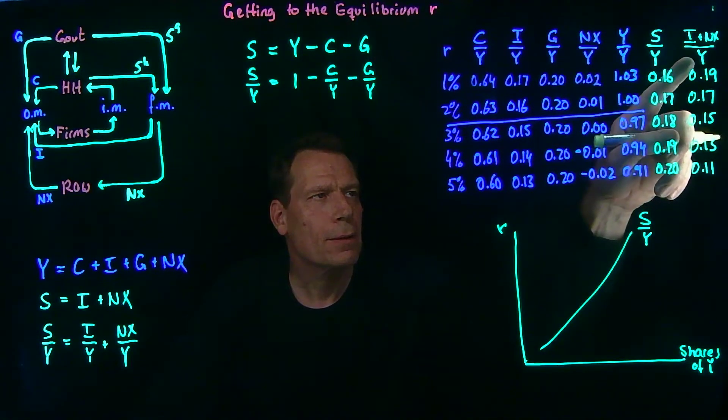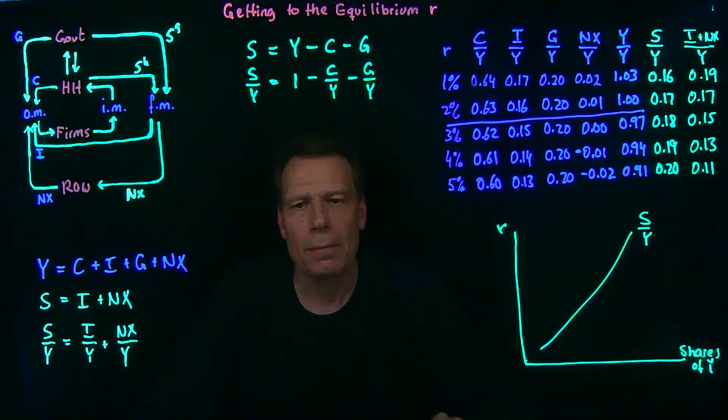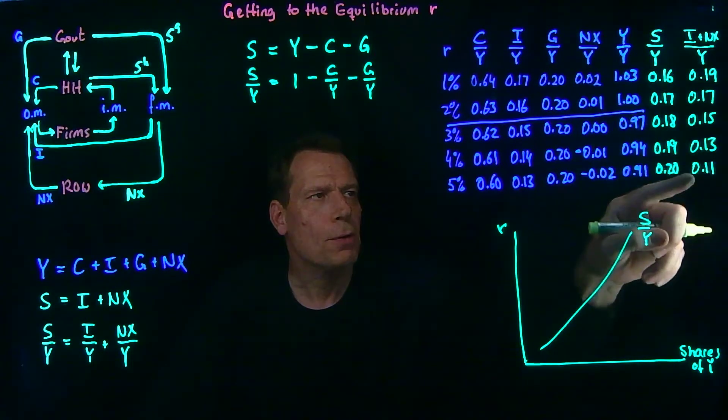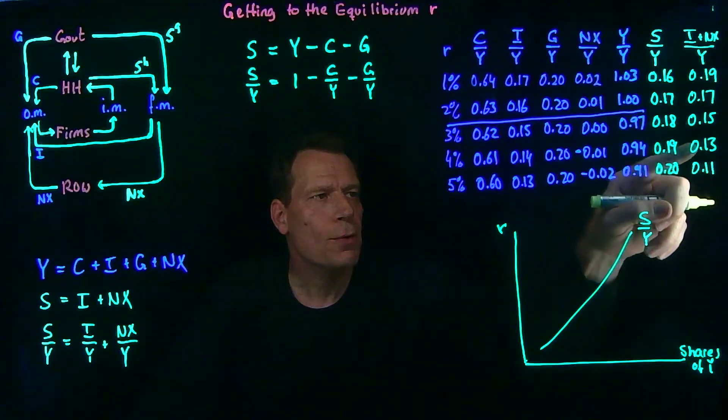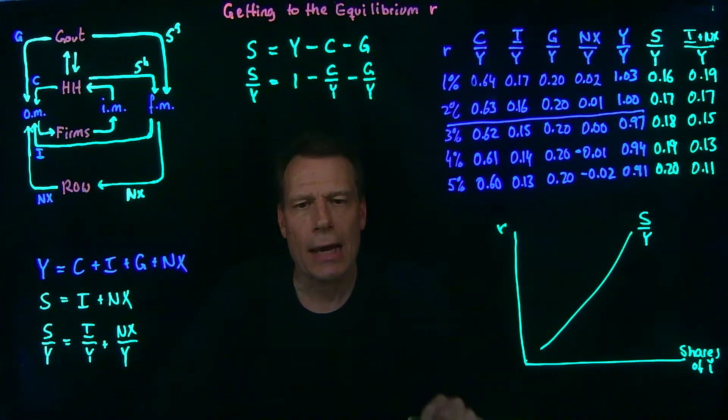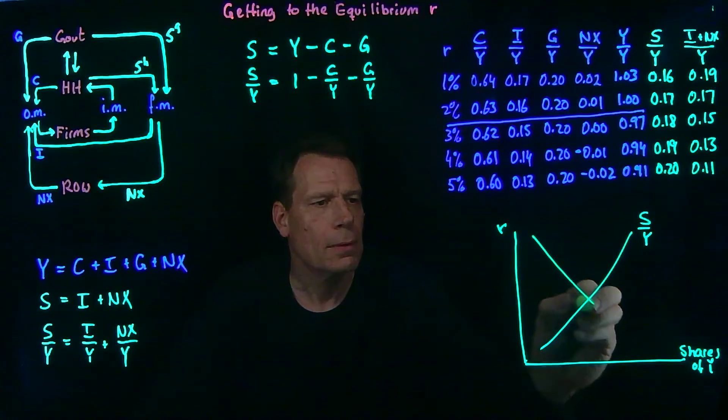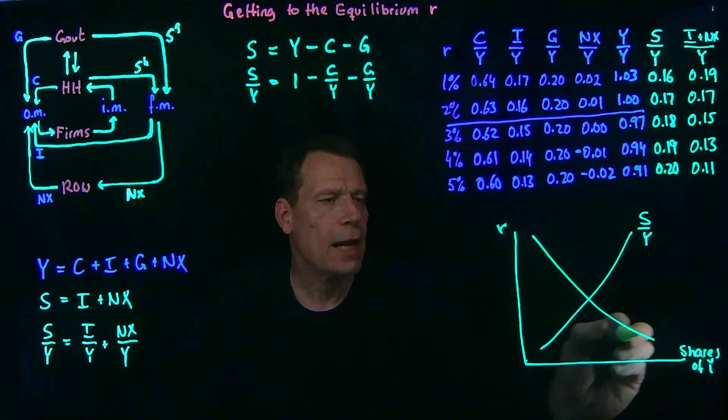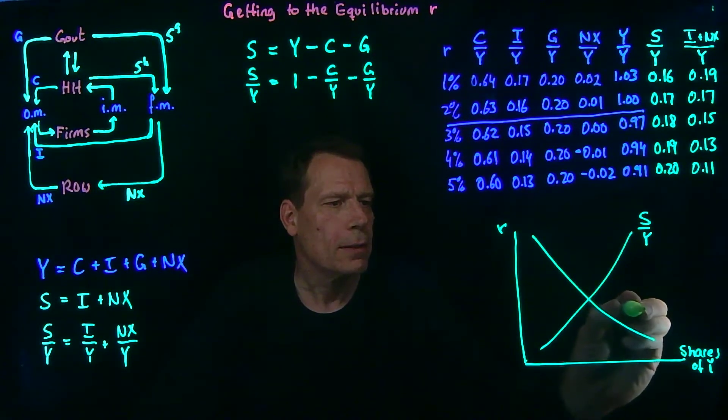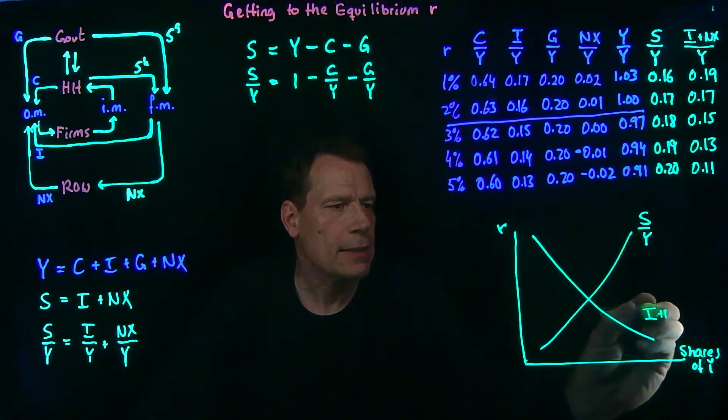The second curve is going to be derived from this column. And it's a downward sloping curve. As the real interest rate goes up, the numbers go down. So we see a downward sloping curve that we'll label i plus nx divided by y.